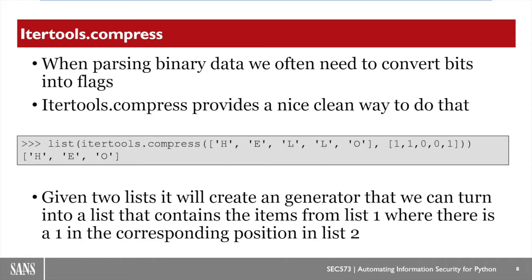I'm going to be using the itertools module, which has a method called compress. Compress takes in two lists of items and compresses the first list based upon the items in the second list. Here I'm calling compress giving it two lists: the first contains the letters in the word 'hello', and the second contains ones and zeros. Anytime there's a one in the second list, it includes the corresponding letter from the first list; anytime there's a zero, it does not. So passing 'hello' with that list of ones and zeros returns the letters H, E, and O — the two L's are left out because their positions in the second list contain zeros.